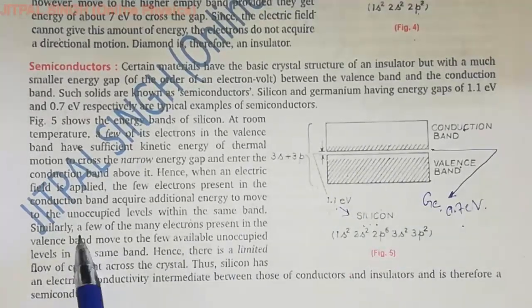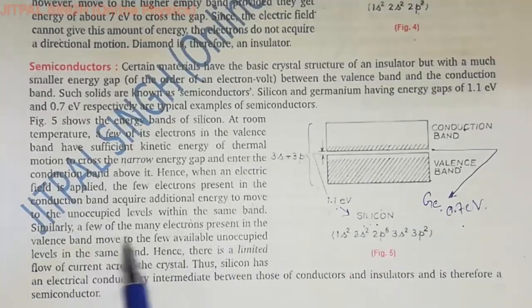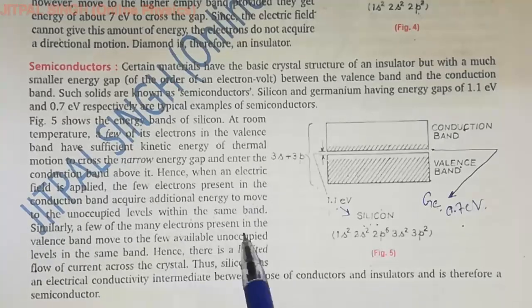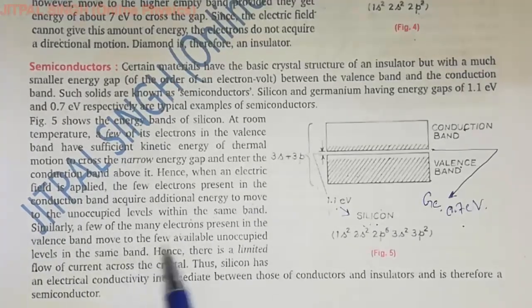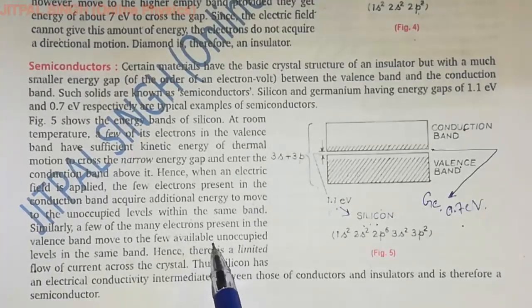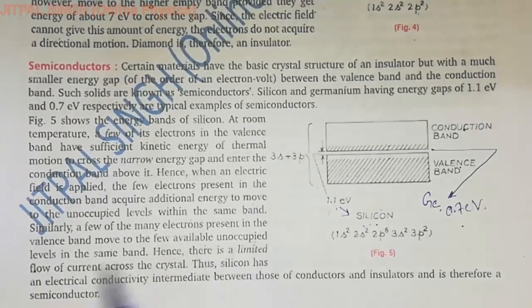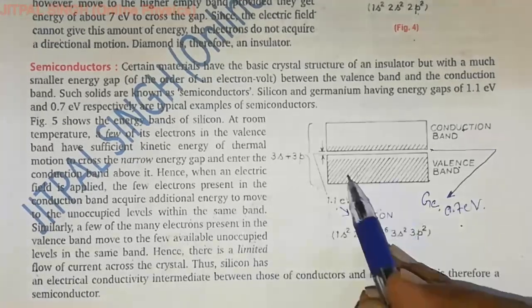Similarly, a few of the many electrons present in the valence band move to the few available unoccupied levels in the same band.